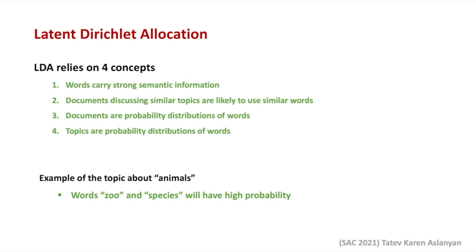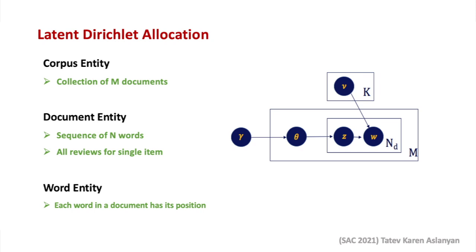LDA is based on the following main concepts. Each word carries strong semantic information. Documents discussing similar topics are likely to contain similar words, and these documents can be represented as probability distributions of these words. Additionally, not only documents, but also the topics can be described as probability distribution of words. For instance, in case the topic is about animals, then the likelihood of the words such as zoo or species will be very high, simply because those words are very often used in the text where the topic is regarding the animals.